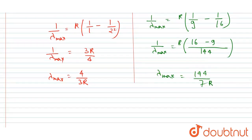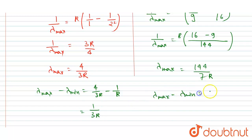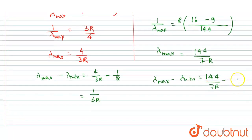Now let's calculate the difference. For Lyman: λ_max - λ_min = 4/(3R) - 1/R = 1/(3R). For Paschen: λ_max - λ_min = 144/(7R) - 9/R = 144/(7R) - 63/(7R) = 81/(7R).